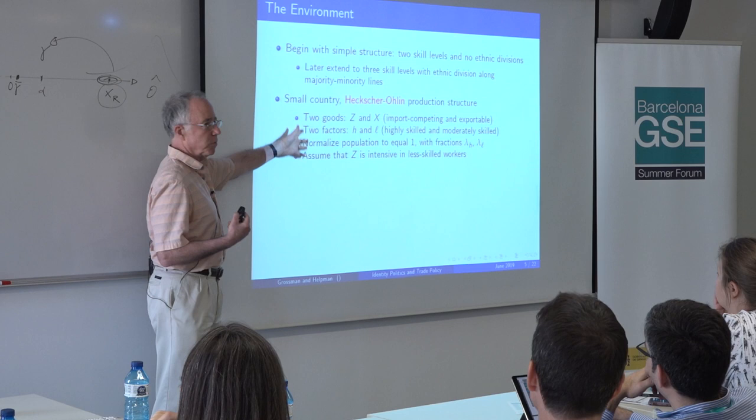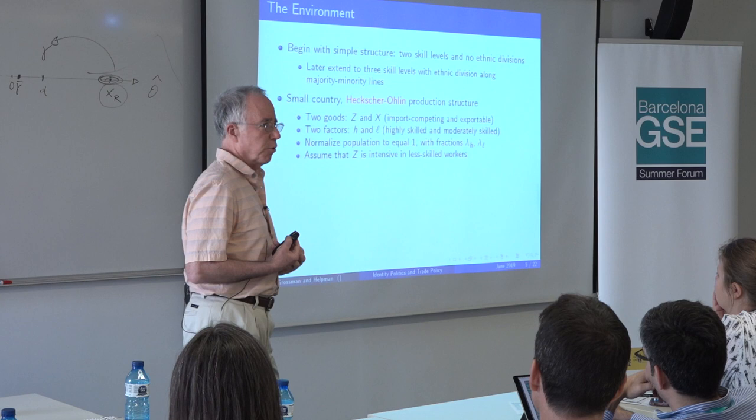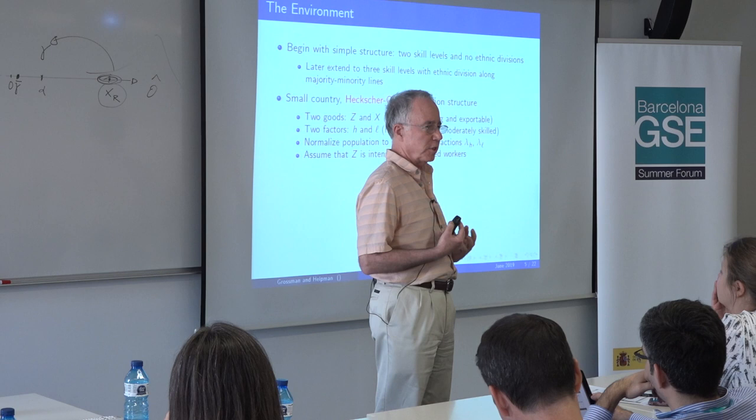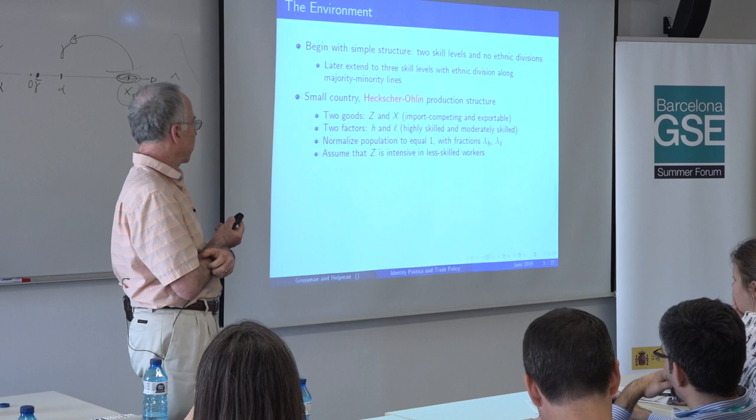Since this is not a trade audience, I'll tell you where this is going. This gives us the famous Stolper-Samuelson theorem: if we protect the import-competing good — put a tariff on it — that's going to raise the income of the workers used intensively there, namely the working class, the moderately skilled, and it's going to lower the income of the elite. And if we open to trade, it's going to do exactly the opposite: benefit the elites at the expense of the moderately skilled.